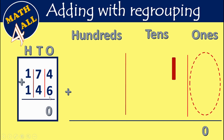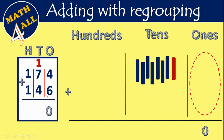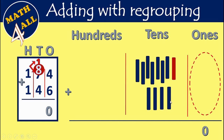So write 0 and carry up 1. Now we will add 1 plus 7 plus 4. Don't forget to add this 1 to the 7 first: 1 plus 7 equals 8. Then 8 plus 4: after 8 — 9, 10, 11, 12. I will write just 2 and carry up 1 in the hundreds place.